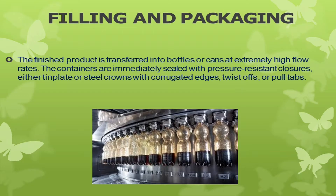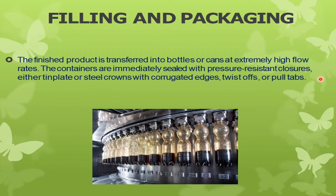The last process is filling and packaging. The finished product is transferred into bottles or cans at extremely high flow rates. The containers are immediately sealed with pressure-resistant closures — either tin plate or steel crowns with corrugated edges, twist-off caps, or pull tabs. This is all about the manufacturing of soft drinks.